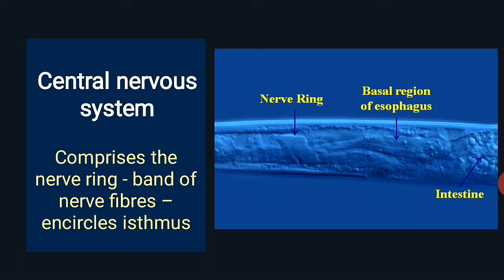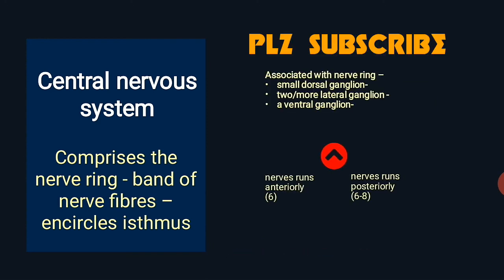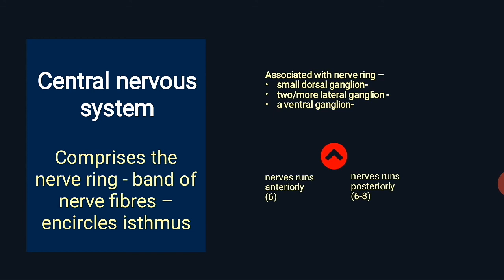In the diagram you can clearly identify the nerve ring. The parts associated with the nerve ring are: dorsal ganglia, two lateral ganglia, and ventral ganglia. For ventral ganglia, there are two sets — about six nerves run anteriorly and another six to eight nerves run posteriorly. The dorsal ganglion is especially for motor function, the lateral ganglion for sensory function, and the ventral ganglion is partly motor and partly sensory.